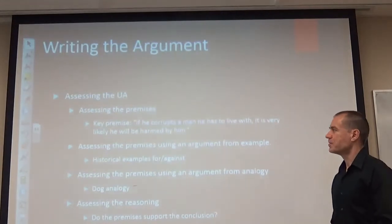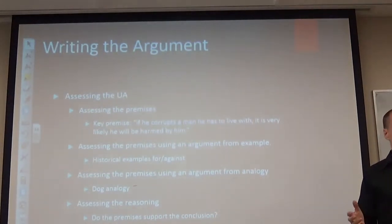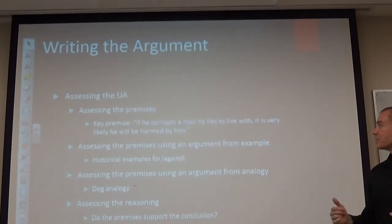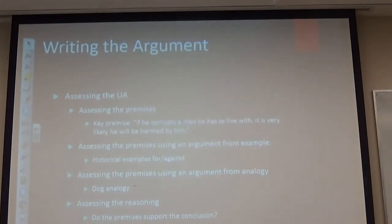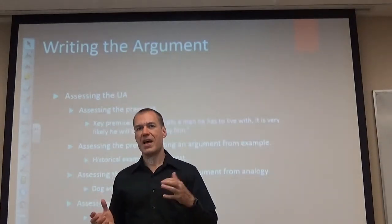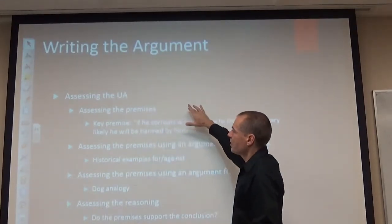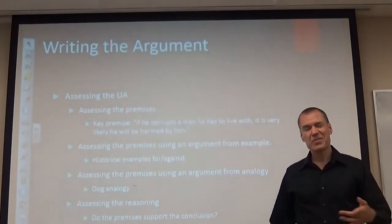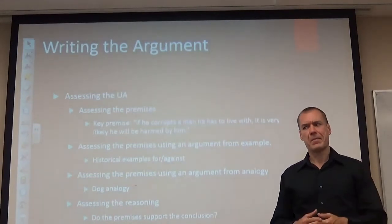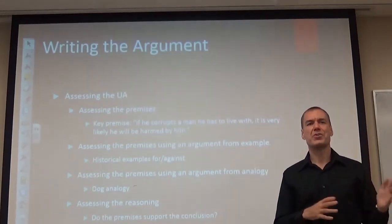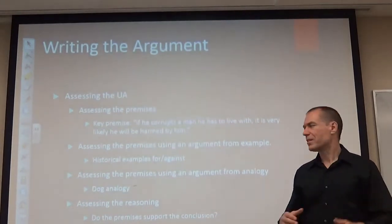The next thing Socrates does to refute the charge is the unintentional argument. When doing the argument section, you don't have to re-present the argument since the reader has read your summary. In assessing the unintentional argument, a tedious approach would be to assess every single part, but arguments have key points the whole thing hinges on. With the unintentional argument, a lot of the setup seems safe to accept — for example, that bad people do bad stuff is basically definitional, like asking whether runners run.